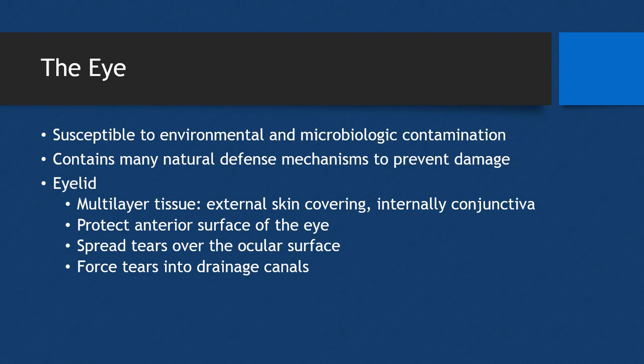Tears help keep the ocular surface lubricated, provide a mechanism for removing debris, and have potent antimicrobial benefits provided by specific enzymes and immunoglobulin A. Once tears pass over the ocular surface, they are forced into drainage canals that converge to form the lacrimal sac — which is between the inner eyelid and the nose. This is a highly vascular tissue area, making it very susceptible to systemic absorption of eye medications, which is why lacrimal occlusion is such an important counseling point.